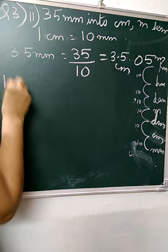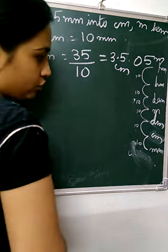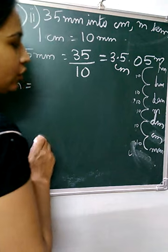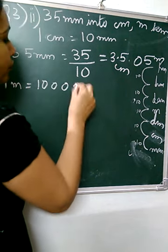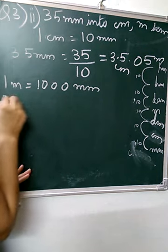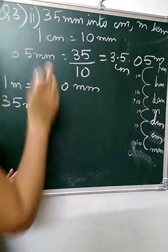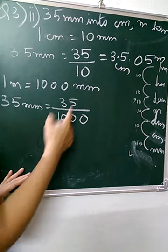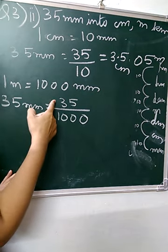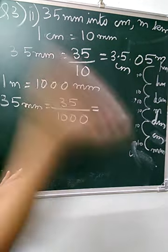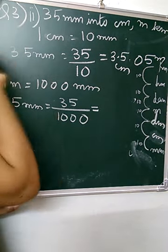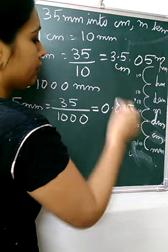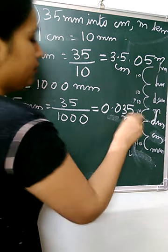Now talking about meters. 1 meter is equal to how many millimeters? We check the distance — 1, 2, 3 steps — so 3 zeros. So 1 meter equals 1000 millimeters. Again, we are converting small to big, so we divide. 35 divided by 1000 — we need 3 decimal places; we have 2 digits, so we apply a zero. Remember to keep a decimal — whenever we put the decimal, we put 0. So the result is 0.035 meters.